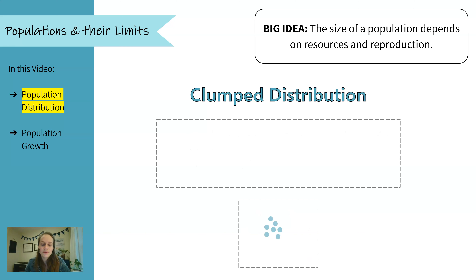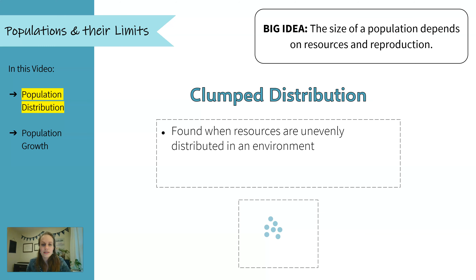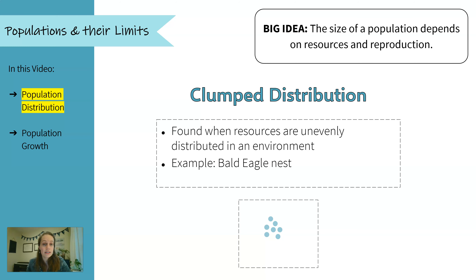Finally, we have a clumped distribution. We see clumped distributions when the resources are unevenly distributed in an environment, so the organisms will tend to be where that resource is — in a clump near where there's more of the resource. An example is a bald eagle nest: the baby bald eagles are all in the nest where the mom can take care of them. The resource is mom and dad protecting and feeding the nest, so they all need to be in one area to receive that protection and food.